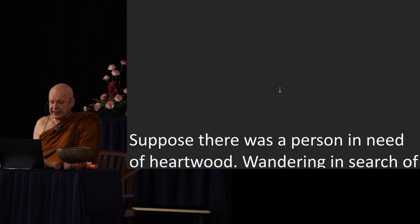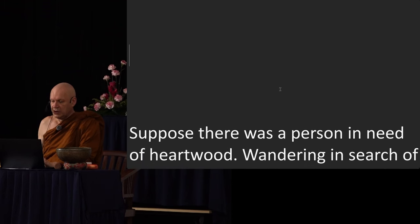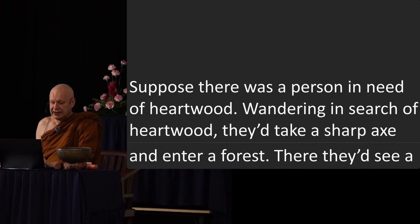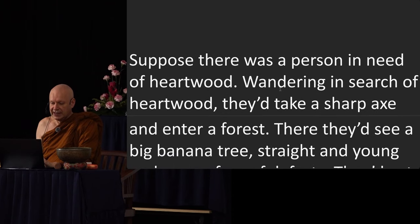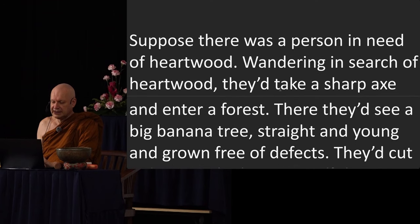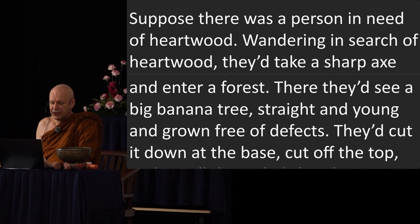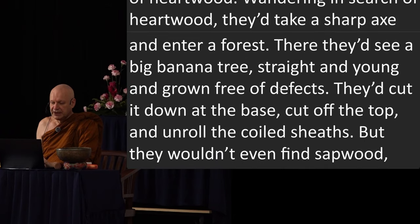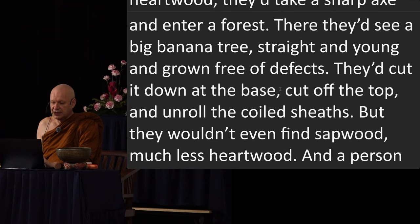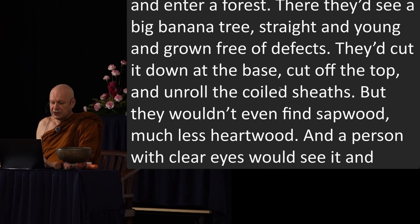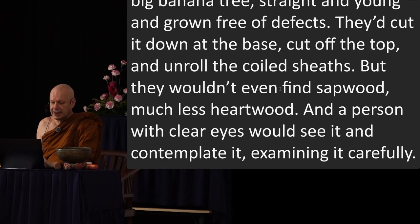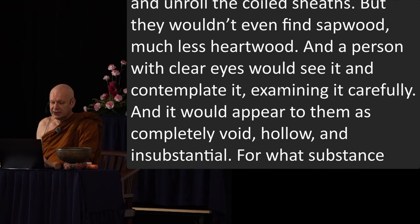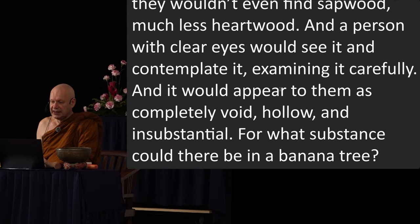So suppose there was a person in need of heartwood. Wandering in search of heartwood, they would take a sharp axe and enter a forest. There they'd see a big banana tree, straight and young, and grown free of defects. They would cut it down at the base, cut off the top, and unroll the coiled sheaths. But they wouldn't even find sapwood, much less heartwood. A person with clear eyes would see it and contemplate it, examining it carefully. And it would appear to them as completely void, hollow, and insubstantial. But what substance could there be in a banana tree?